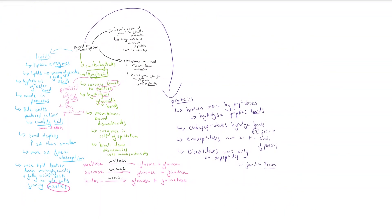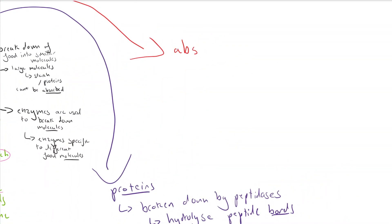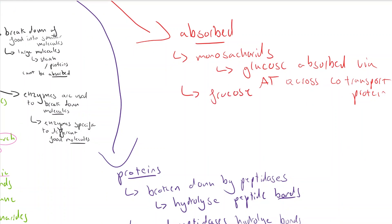We also have to know that dipeptidases break down dipeptides, which break down the peptide bond between them, separating two amino acids. Once all these large molecules are broken down into smaller monomers or two monomers joined together, they then have to be absorbed.